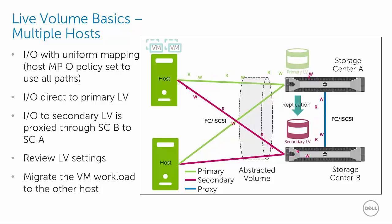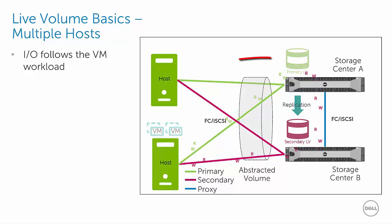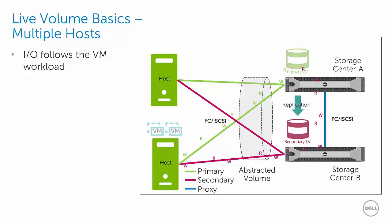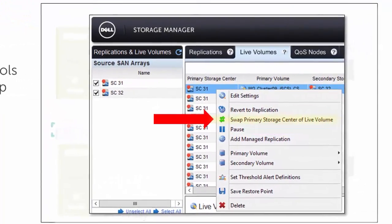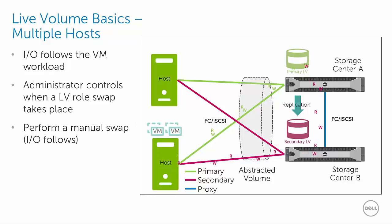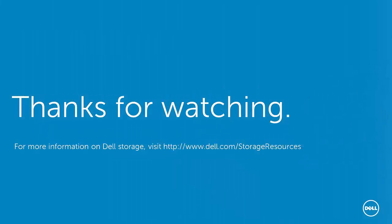First, let's live migrate the VM workload from one host to the other. Once the workload is migrated, the I/O will follow. Given this configuration, it might be perfectly acceptable to allow the primary live volume to stay on Storage Center A. If moving the primary live volume to Storage Center B is desired — for example, if maintenance needs to be done on Storage Center A — then an administrator can initiate a manual role swap using the Dell Storage Manager Client. We'll initiate a role swap manually and note how the data I/O to the secondary live volume on Storage Center A is now proxied to the primary live volume on Storage Center B. That concludes Part 1 of 3 of this demo video series. Please continue by viewing Part 2.